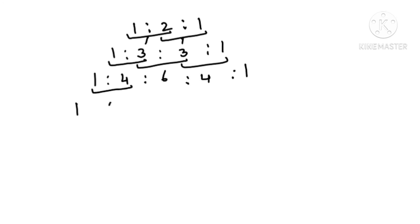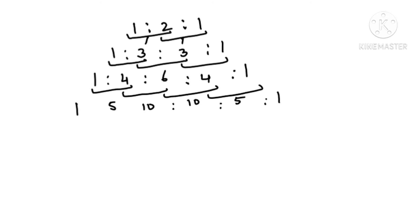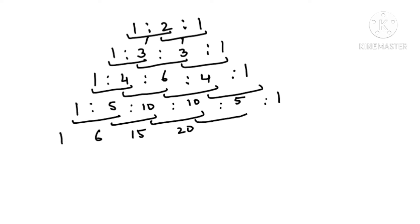Apply the same step once more and you get 1:5:10:10:5:1. One more time: 1, 6, 15, 20, 15, 6, 1. So: 1:2:1 is the monohybrid genotype ratio; 1:4:6:4:1 is the phenotype ratio when controlled by two genes; and 1:6:15:20:15:6:1 is when controlled by three genes.